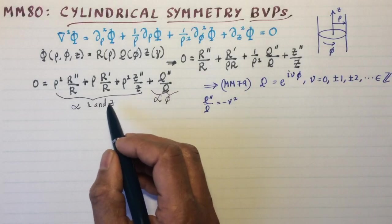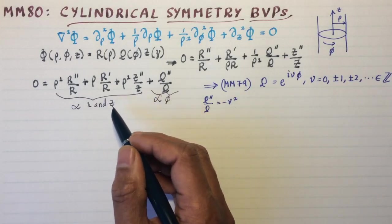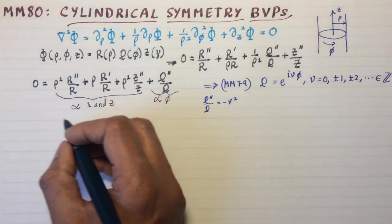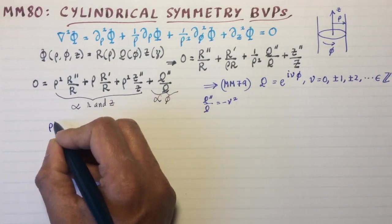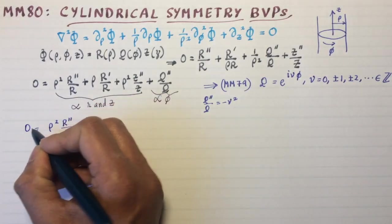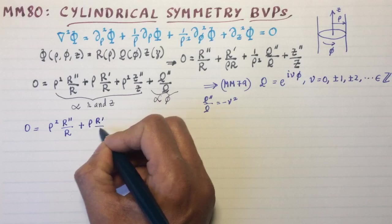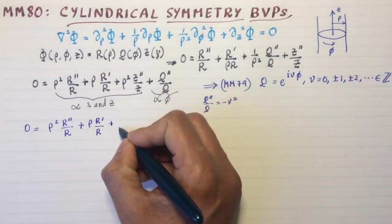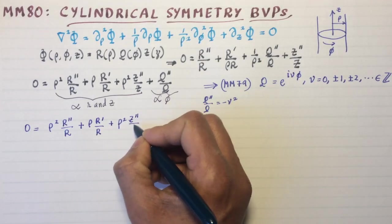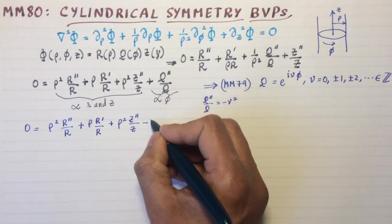The rest of it will be equal to +ν². Or if you bring everything to the left side, it's going to be -ν². So the rest of the equation looks like this: ρ² R''/R, zero equals that, plus ρ R'/R, plus ρ² Z''/Z. And since Q''/Q is -ν², I'll write that here.